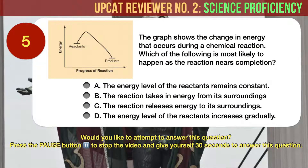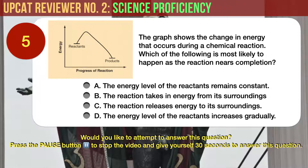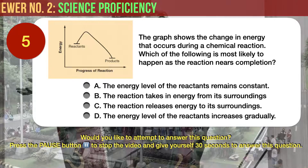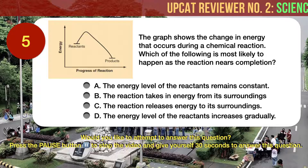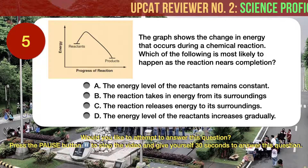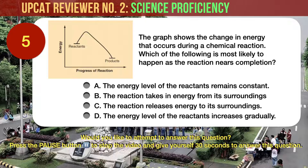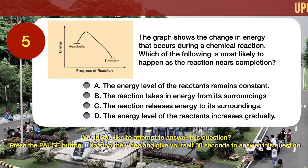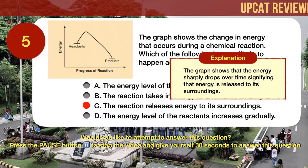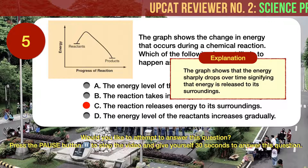Question number 5. The graph shows the change in energy that occurs during a chemical reaction. Which of the following is most likely to happen as the reaction nears completion? A, the energy level of the reactants remains constant. B, the reaction takes in energy from its surroundings. C, the reaction releases energy to its surroundings. D, the energy level of the reactants increases gradually. The correct answer is C. As shown in the graph, the energy sharply drops over time. This means that energy is released to its surroundings.